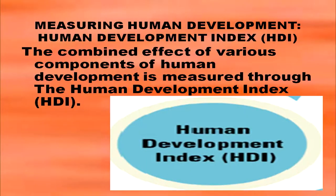The combined effect of various components of human development is measured through the Human Development Index, commonly known as the HDI, developed by the UNDP. Having understood the various aspects of development, it's time to focus on the factors that affect economic growth.